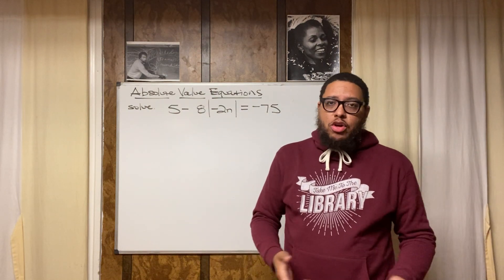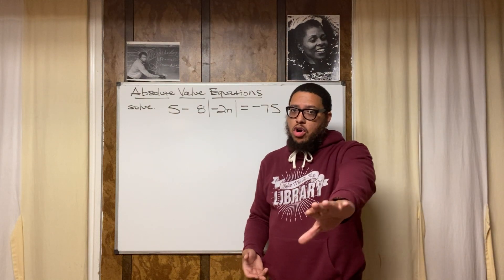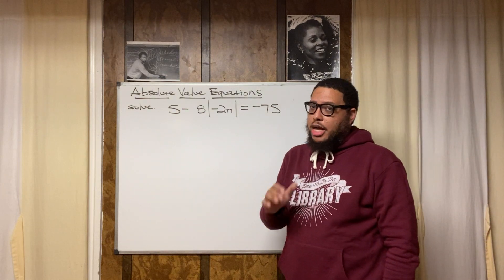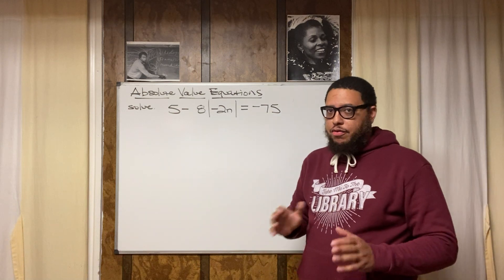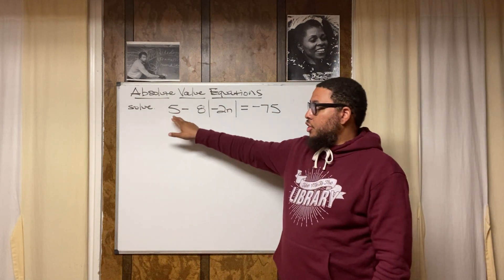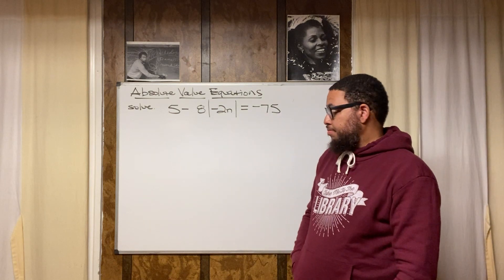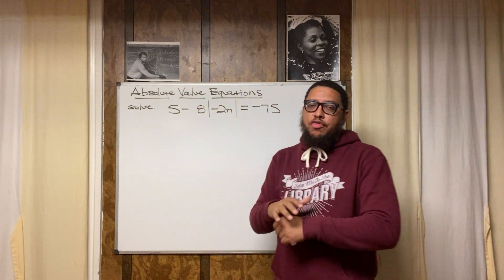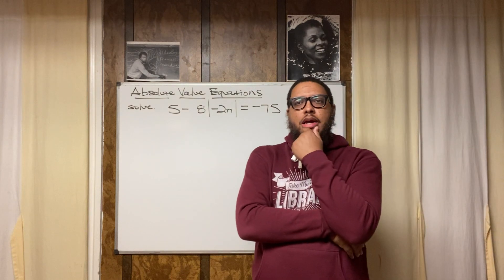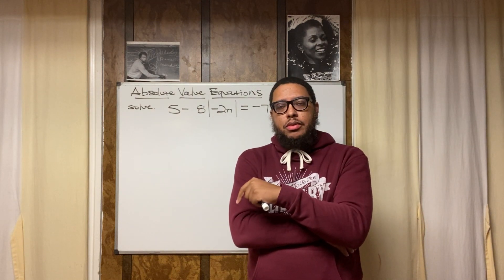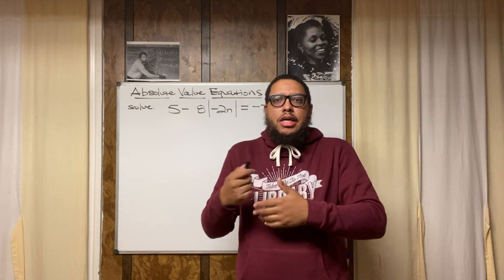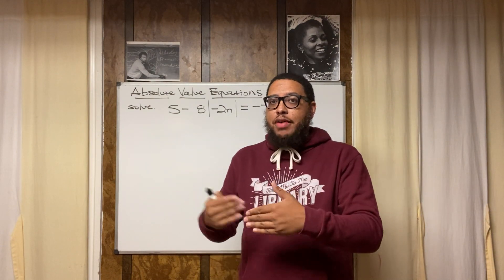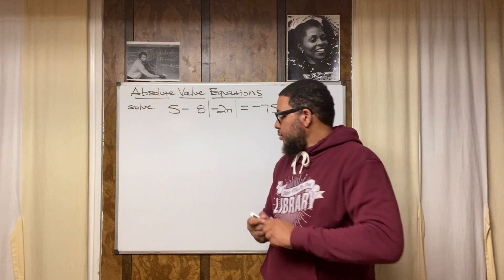You might be wondering which one to do first. Technically it doesn't matter, but here's a word of caution: if you get rid of the negative 8 first, your math is going to get ugly — not wrong, but ugly. You want to avoid ugly math if at all possible. Get rid of the 5 first and you'll be in better shape. The 5 is just a positive five — like adding five — so the opposite operation is subtracting five.